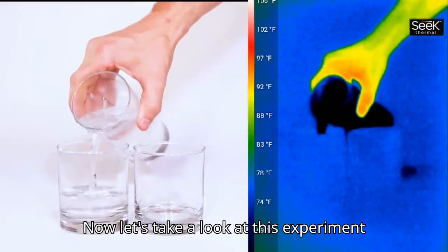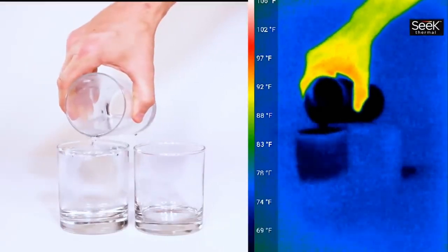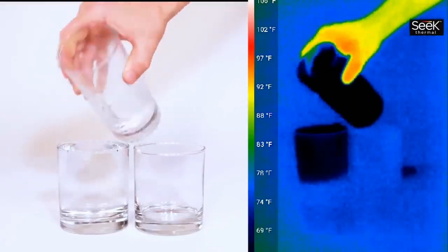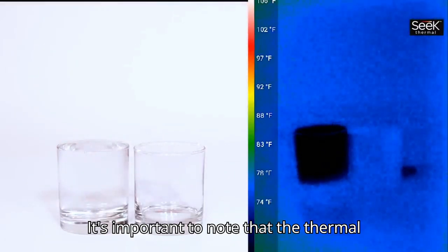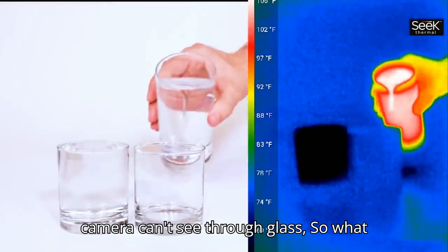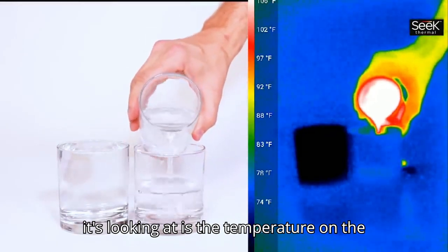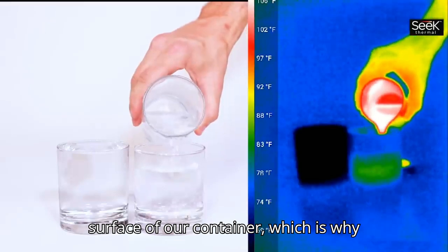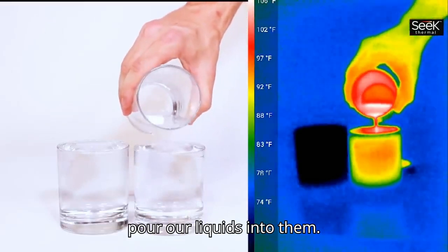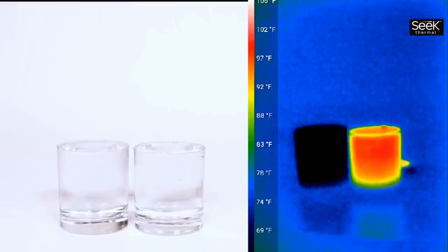Now let's take a look at this experiment with a thermal infrared camera. It's important to note that the thermal camera can't see through glass, so what it's looking at is the temperature on the surface of our container, which is why there's a little bit of a delay when we pour our liquids into them.